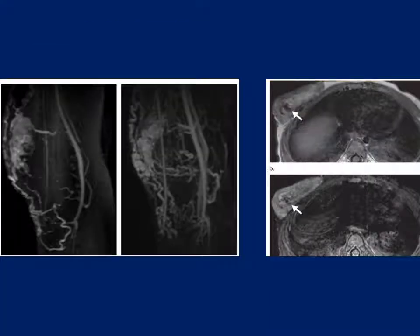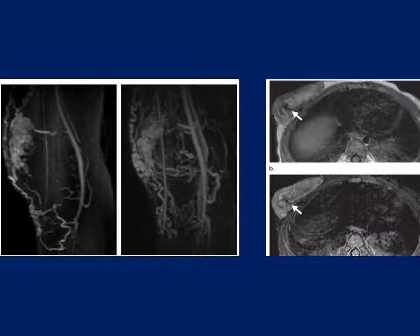Because of discussion about AVM versus hemangioma, comparative images from an article are shown. In AVM, the mass lesion is predominantly vessels — there is really no soft tissue component; whatever mass is seen is all vascular. In contrast, in hemangioma there is a discrete mass lesion within which you see arterial flow or flow voids. This is the key difference between hemangioma and AV malformation.